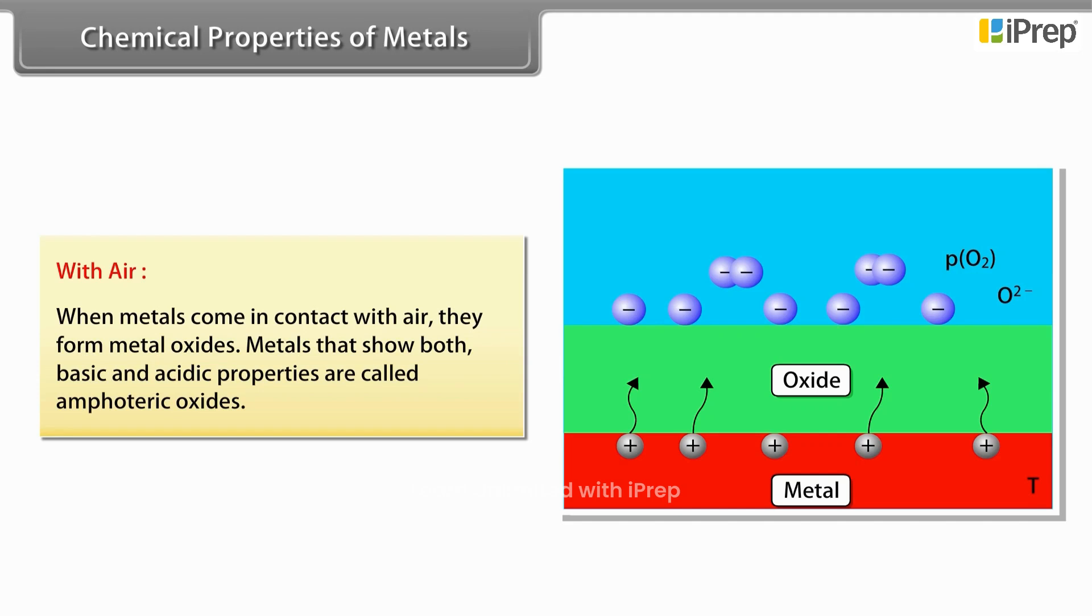With air: When metals come in contact with air, they form metal oxides. There are some metals that show both basic and acidic properties. Such metals are called amphoteric oxides.